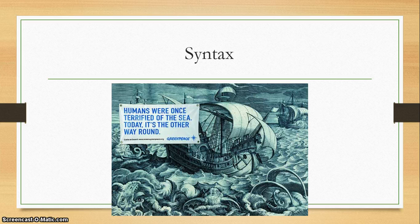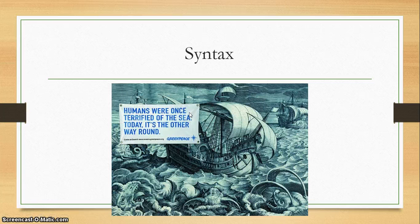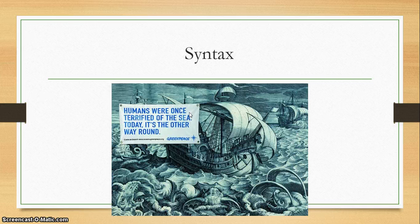You can also look at syntax, which means sentence structure — how a sentence is assembled. Oftentimes people will use a short sentence for impact. That could look like a paragraph made up of many long sentences that ends with one short one; that'll stand out to the reader. It's also done on websites or in newspaper articles where they have a one-sentence paragraph — it's designed to stand out and force the reader to notice it. In this case, they have two different sentences: 'Humans were once terrified of the sea, today it's the other way around.' There were many ways to express this idea, but it doesn't have the same poetry. So you want to look really carefully at how the sentence is structured and figure out why it might be done that way.